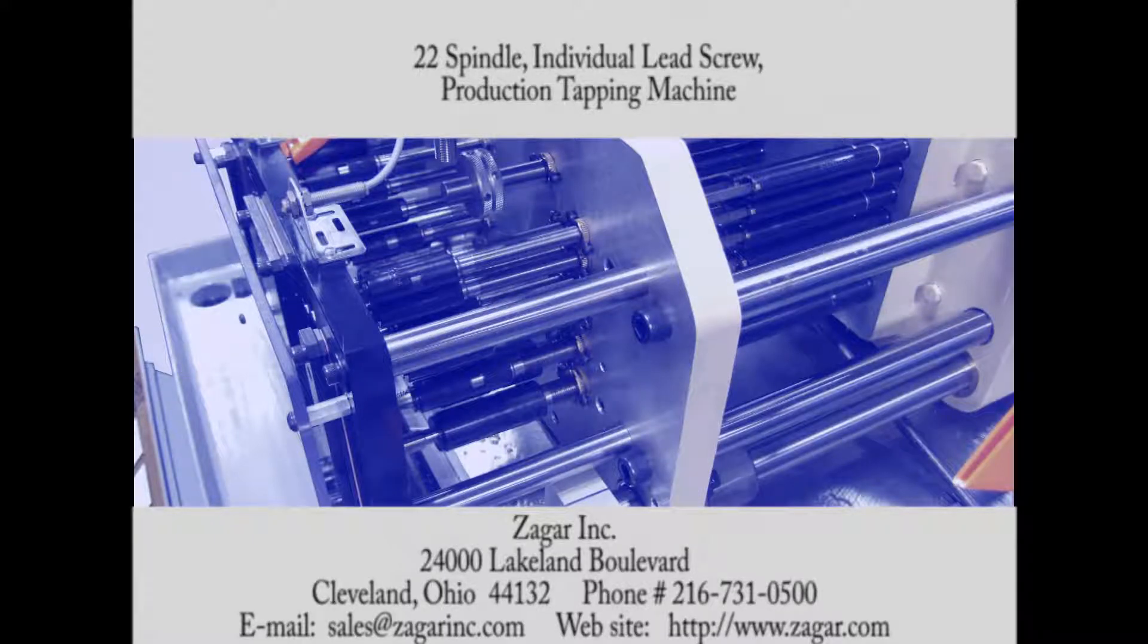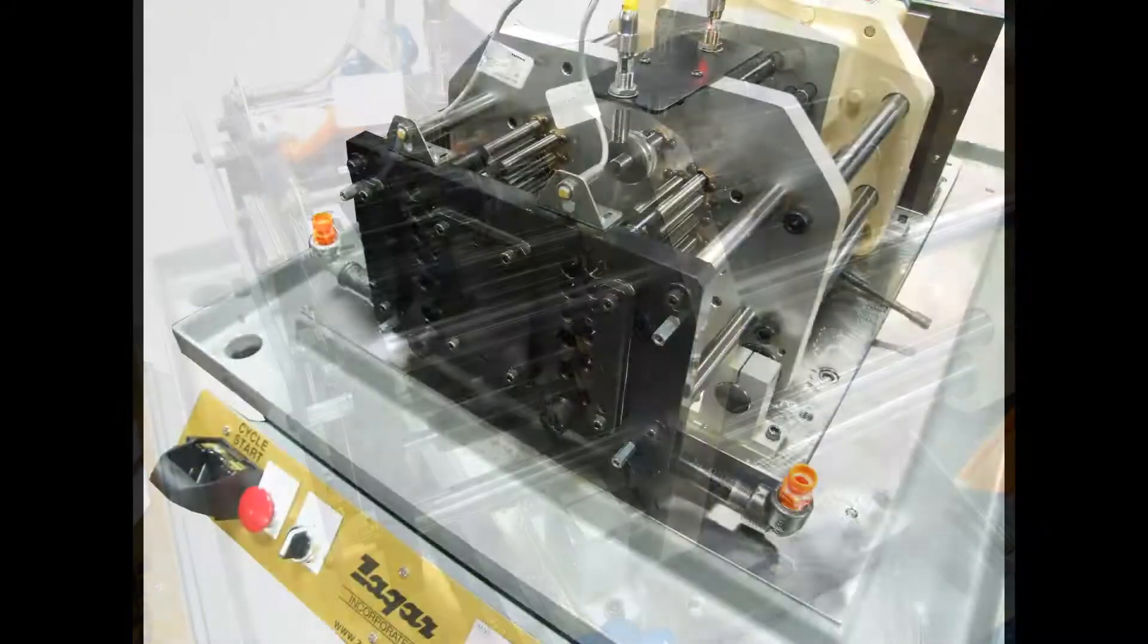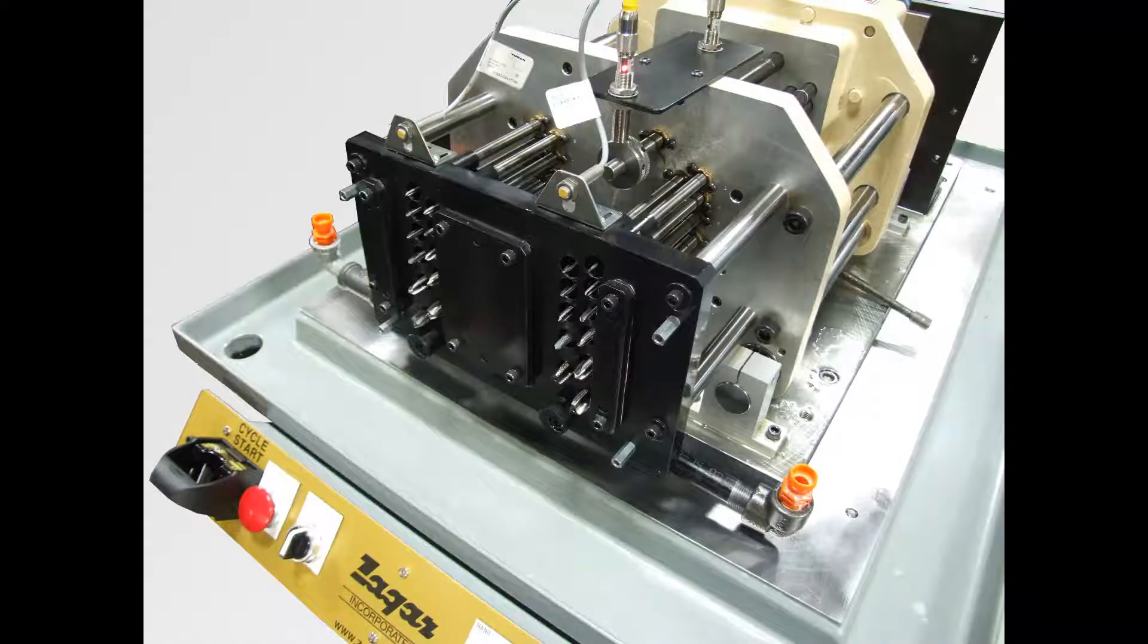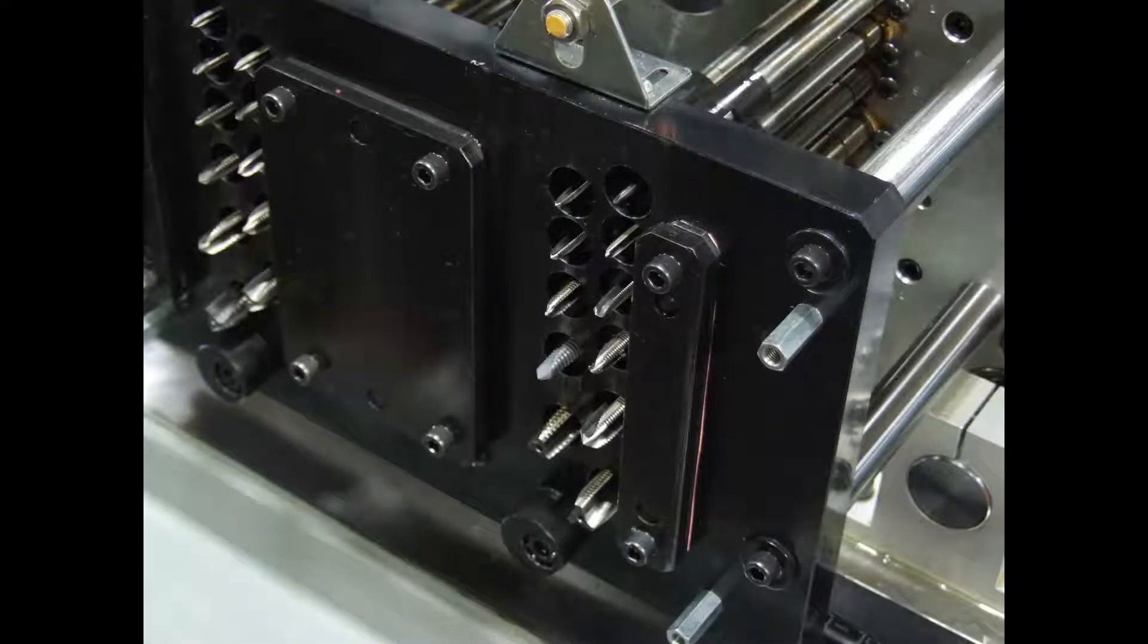You're looking at the fastest manufacturing method for tapping multiple holes in mass-produced parts. In this case, 22 holes ranging in size from number 4-48 to a half-inch 20 are tapped in one cycle by this machine that was recently built by Zagar Incorporated in Cleveland, Ohio.